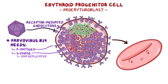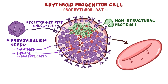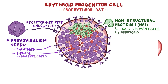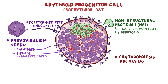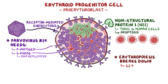As the virus replicates and matures, it produces a protein called non-structural protein 1, or NS1, which is toxic to human cells and causes apoptosis, or cell death. This means that erythropoiesis breaks down, and fewer new red blood cells go into circulation as a result of parvovirus B19 infection.